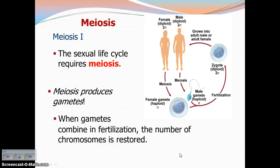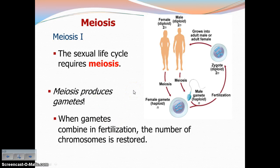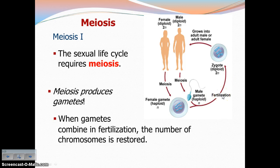In order for organisms to reproduce sexually, they have to have a process that produces sex cells, and that's what meiosis is. Meiosis is the cell division process that produces gametes, that produces sex cells. When we produce sex cells, males produce sperm and females produce eggs — those are both haploid cells. They get joined together into the full 46 during fertilization. So the number of chromosomes is restored to that diploid number during fertilization.